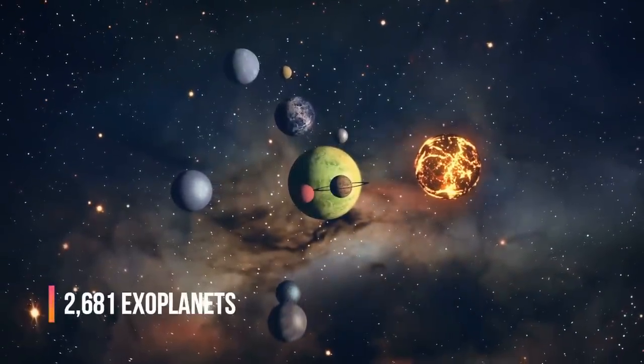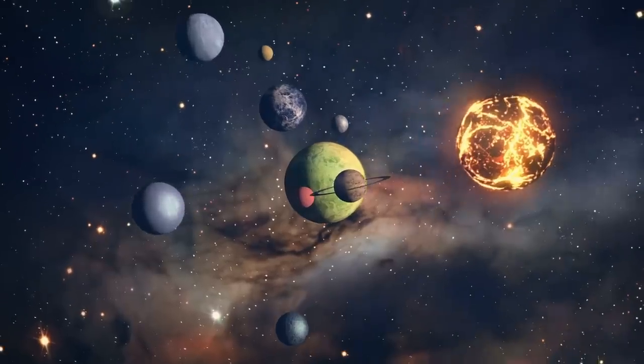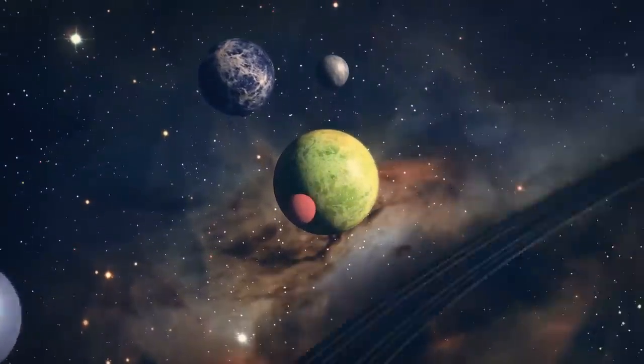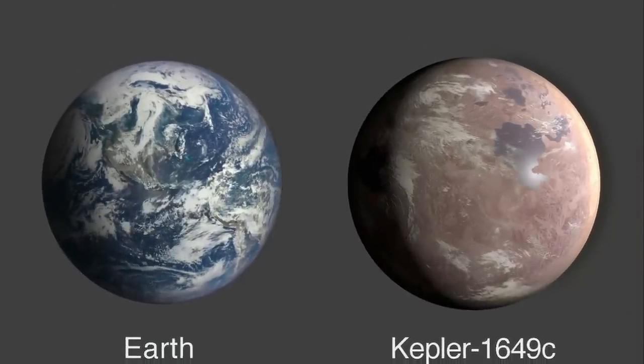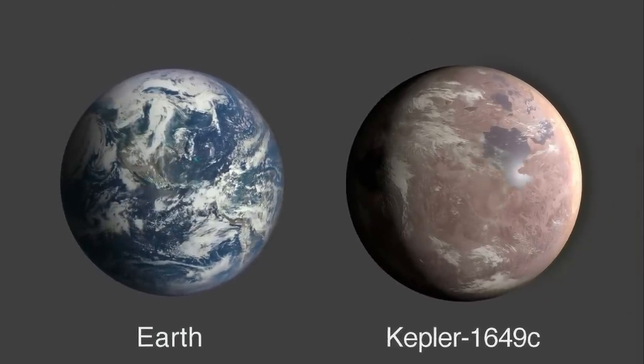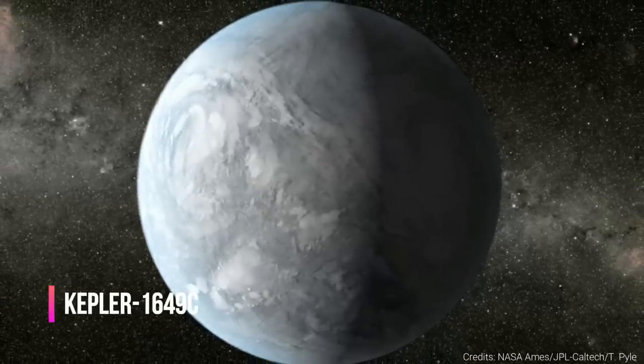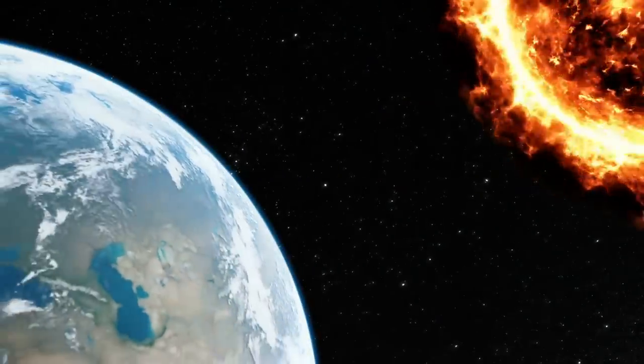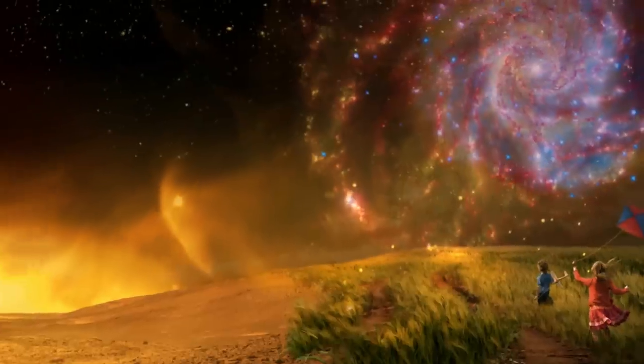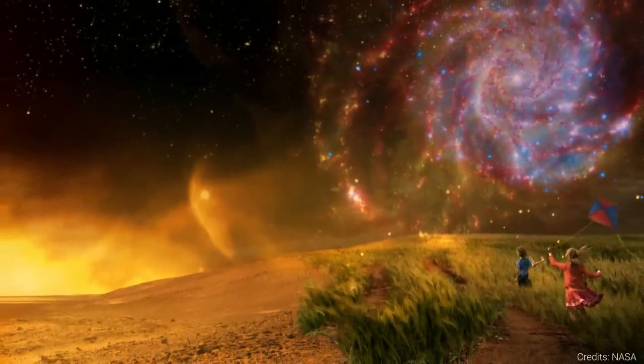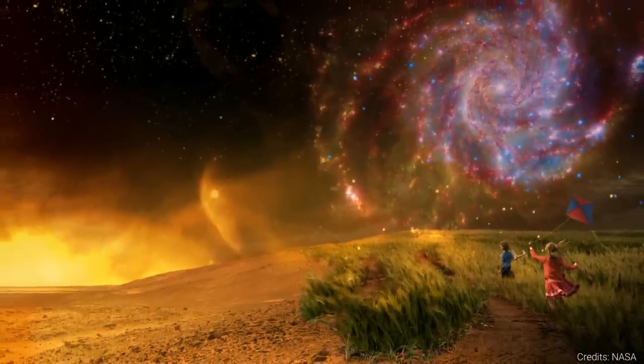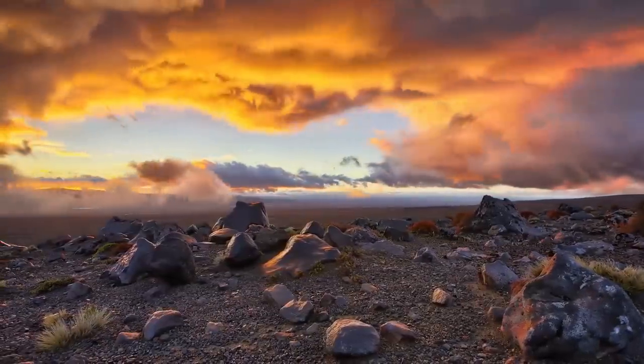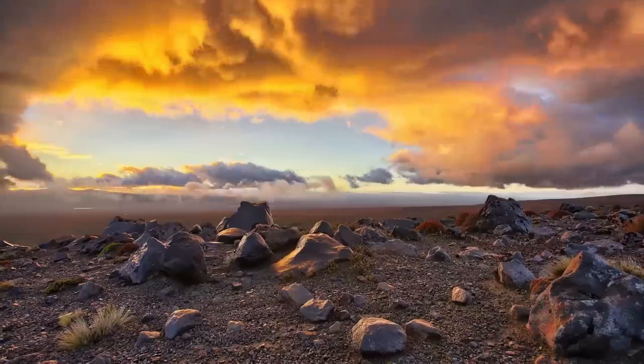Out of the 2,681 exoplanets spotted by NASA's Kepler Space Telescope between 2009 and 2018, this one is the most similar in size and potentially temperature to our own planet, according to a new study. The planet has been dubbed Kepler-1649c. It's 1.06 times larger than Earth and receives about 75% of the amount of light that Earth gets from the Sun. This suggests that the surface temperature of the exoplanet could be similar to Earth, which is a key factor in its potential of being a planet that we can colonize in the future.